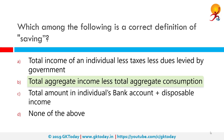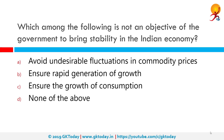Which among the following is the current definition of saving? The correct answer is total aggregate income less total aggregate consumption. If you are earning 10,000 rupees a month and spending 8,000, the difference of 2,000 rupees is your total saving.